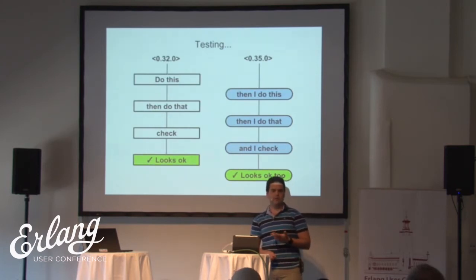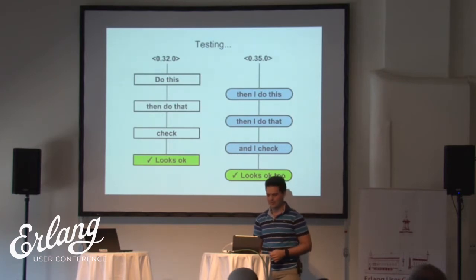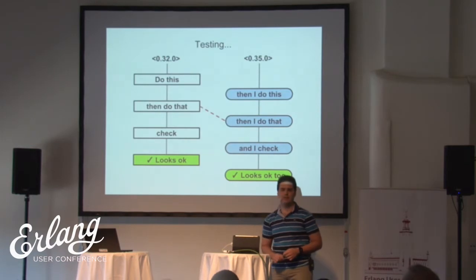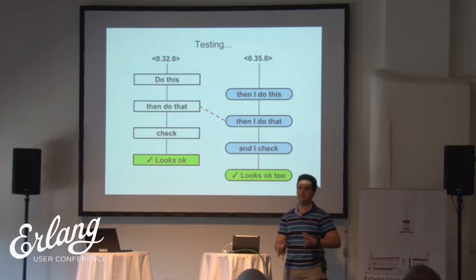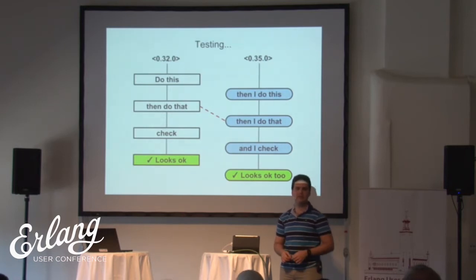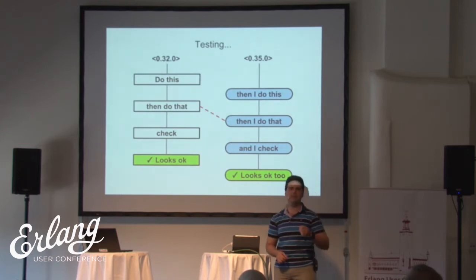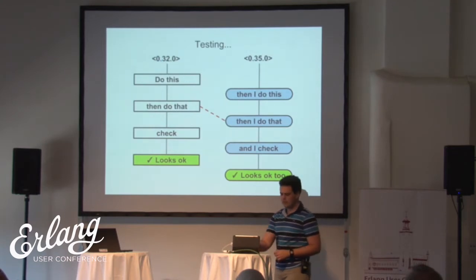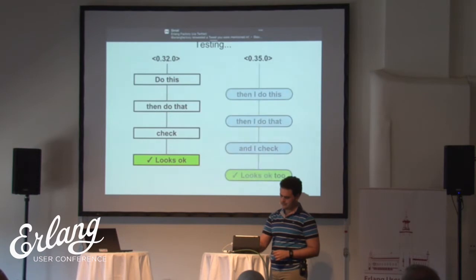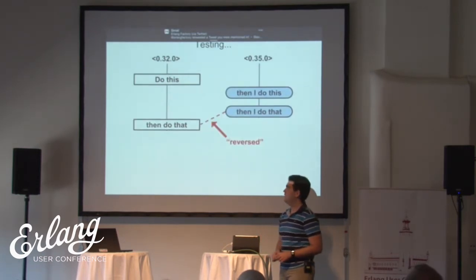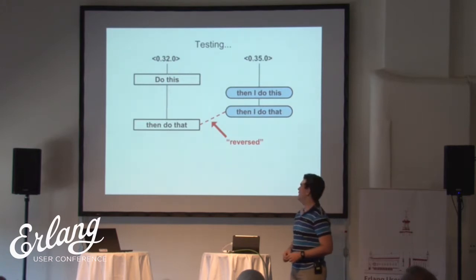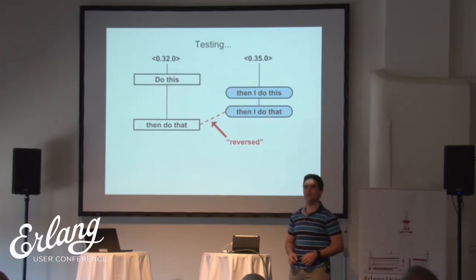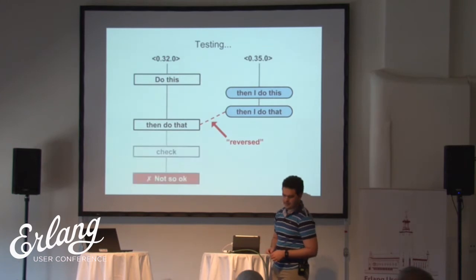The problem is that since we are in Erlang and we are concurrent, we are going to suffer from some issues that are not there in sequential testing. For example, there might be the case that between these two processes, these two events are in some kind of dependency. Maybe one of them is sending a message that the other is receiving, or writing something in an ETS table, or registering a process that the other wants to communicate with. So while this might go very well in our unit test, a slight change where the events are ordered differently — the ordering between the write and the read, or the sending and the after-timeout is reversed — the result might not be so okay.